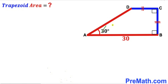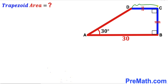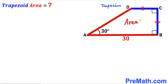Welcome to pre-math. In this video we have trapezoid ABCD, where base AB is 30 units, angle BAD is 30 degrees, base CD equals height BC, and there are two 90-degree angles as shown. The trapezoid is also called the trapezium. Our task is to calculate the area of trapezoid ABCD.